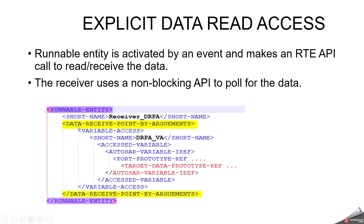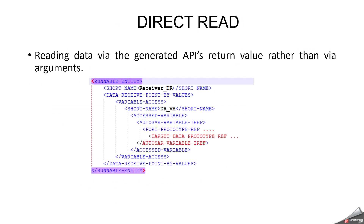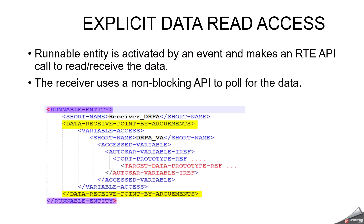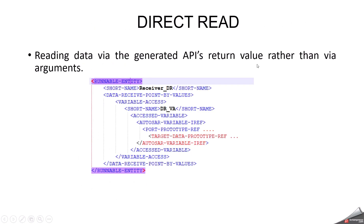For explicit data read access, we will use a data receive point by arguments. Whenever you want to call a function, you call an RTE API, pass the argument, and the argument data will be filled — that is how you get the data. The receiver uses a non-blocking API to poll for the data. The runnable entity is activated by an event and makes an RTE API call to read or receive the data. For direct read, you use data receive point by values, in which case you get a return value directly. The difference between direct read and explicit read is: direct read returns data via return value, explicit read returns data via arguments.